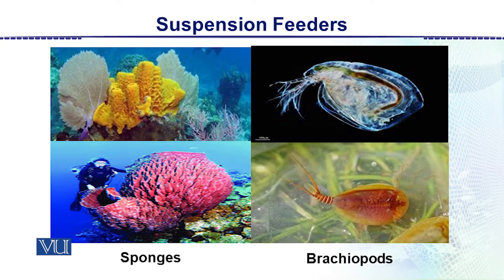One example of suspension feeders is sponges. There is a variety of sponges — small and big. In this diagram there is a comparison showing a diver, because sponges are usually found at different depths of the seas. Water continuously moves across them.